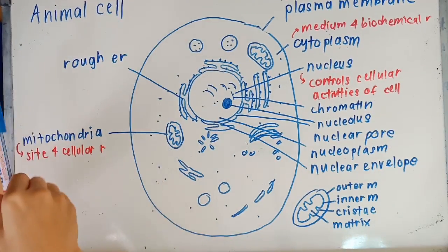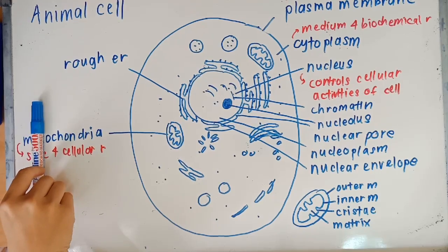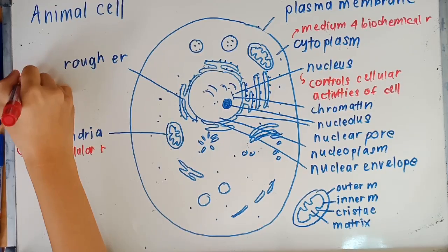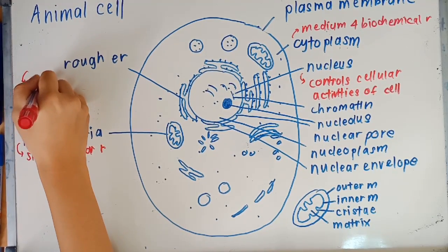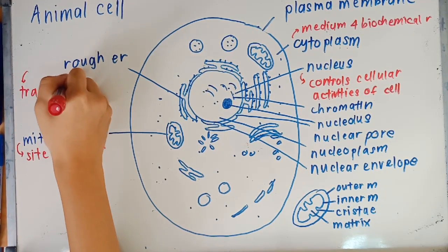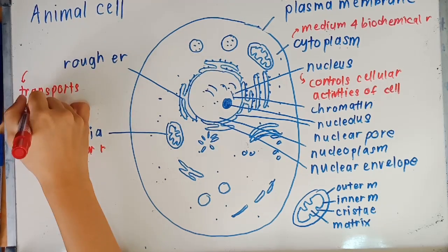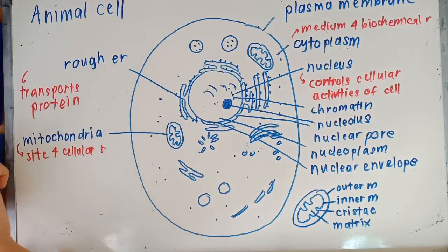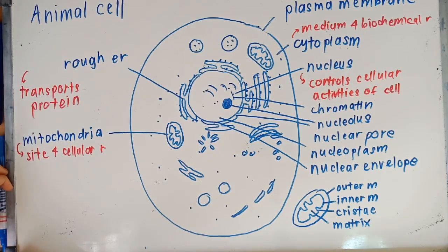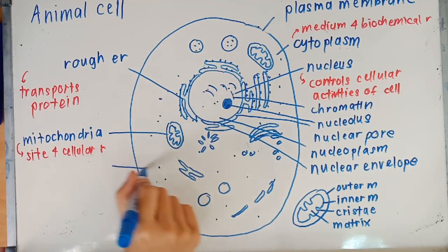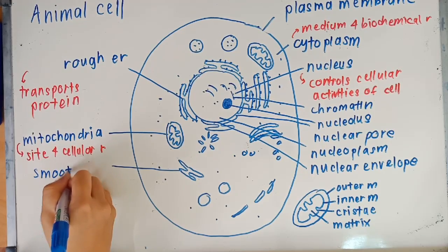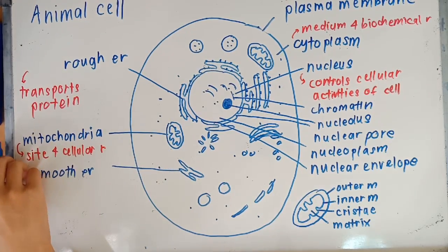So now we'll move on to the rough ER. Rough ER is short - the full form of ER is endoplasmic reticulum. So it's known as the rough endoplasmic reticulum and it is usually attached to the nucleus. The function of the rough ER is that it transports protein produced by ribosome. Remember that the rough ER is always attached to the nucleus.